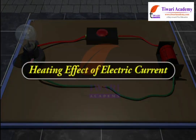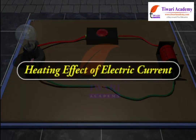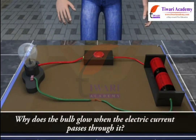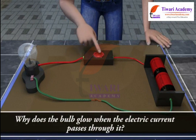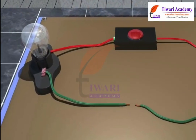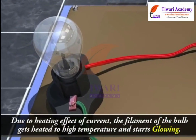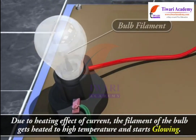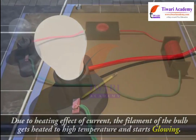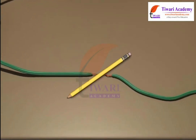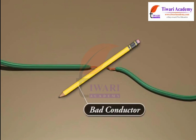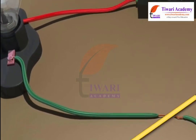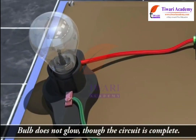Heating effect of electric current. Why does the bulb glow when the electric current passes through it? Due to the heating effect of current, the filament of the bulb gets heated to high temperature and starts glowing. If the current flowing through a circuit is weak, or the material may not conduct electric current, the filament does not get heated sufficiently and does not glow, though the circuit is complete.